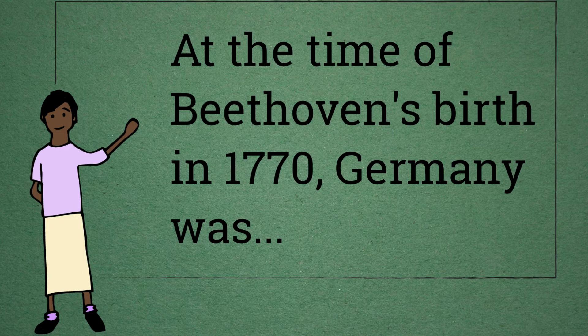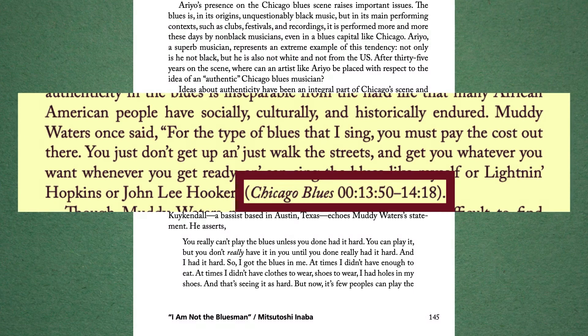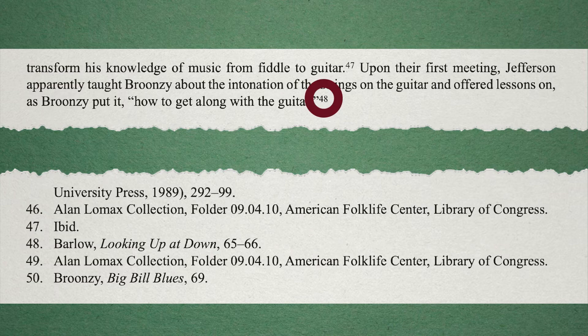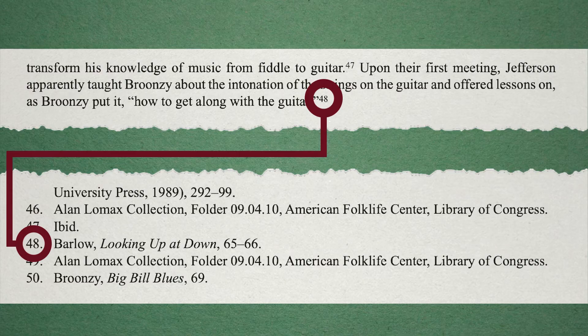Where are citations used? Citations can be found right in the text of a book, article, or other source. They can also be found in footnotes or endnotes. Look for the small numbers at the end of sentences in a book, article, or other source. These lead to the citation listed elsewhere.